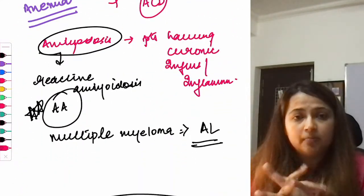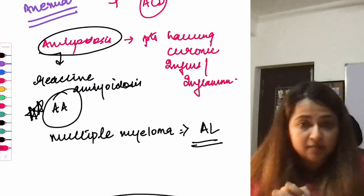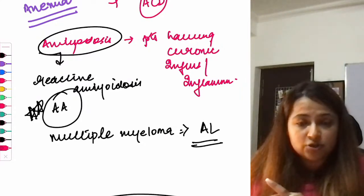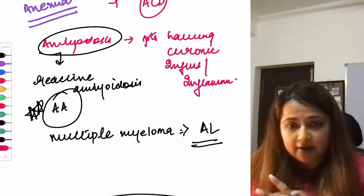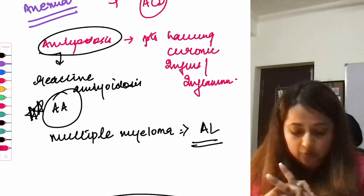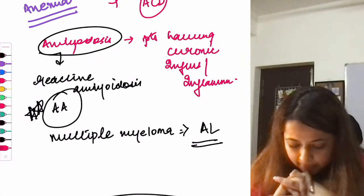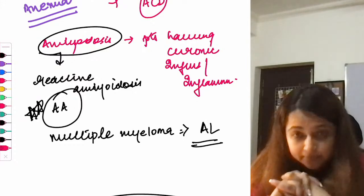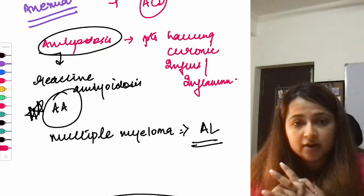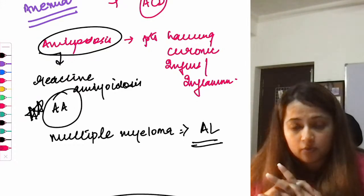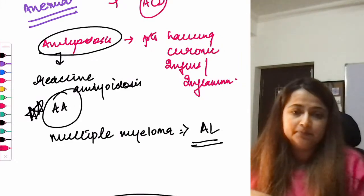The rest of the differences between iron deficiency anemia and anemia of chronic disease — including transferrin and transferrin saturation — will be covered tomorrow. PDFs will be uploaded to the Telegram group. See you next class.